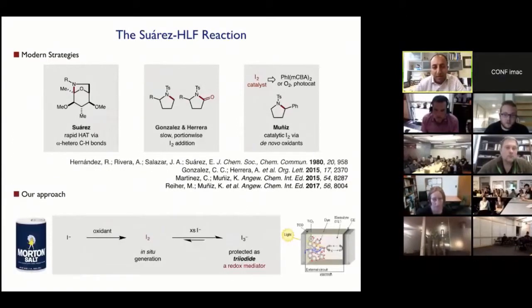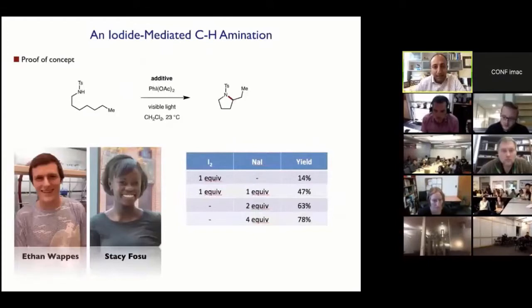And so ours was a complementary solution. We thought if we could simply make iodine in situ from a cheap sodium iodide source, one advantage might be, and this is borrowing from the battery redox chemistry world, is that excess iodide might be able to slowly scoop up the excess iodine as triiodide. And so we essentially would have a syringe pump forming triiodide, having triiodide and iodide form iodine slowly over time. And of course, I wouldn't tell you about this unless it worked. And this is work by Ethan Wapis and Stacey Fosu, who were two of my first graduate students who showed that you don't even need to add iodine as you dose in a little bit more sodium iodide. You can essentially solve this secondary C-H amination for the first time.